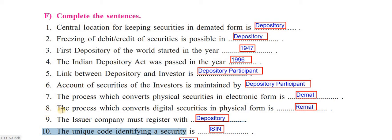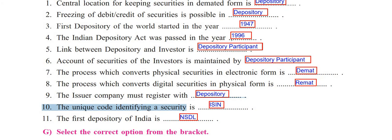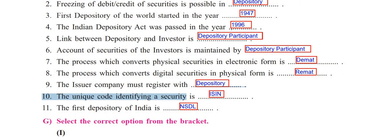Seventh: the process which converts digital securities into physical form is called Remat, or Rematerialization. Eighth: the issuer company must register with the depository. Tenth: the unique code identifying a security is definitely ISIN — full form is International Securities Identification Number. Eleventh: the first depository of India is NSDL, that is National Securities Depository Limited.